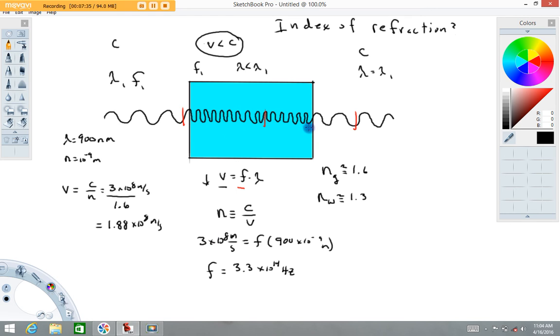So, to calculate the wavelength, what I'm going to do is basically use this relationship again, except I'm going to use my new velocity now. So, we're going to have 1.88 times 10 to the eighth meter per second equals the frequency, which we know is 3.3 times 10 to the 14th hertz, times the new wavelength, which we're looking for.